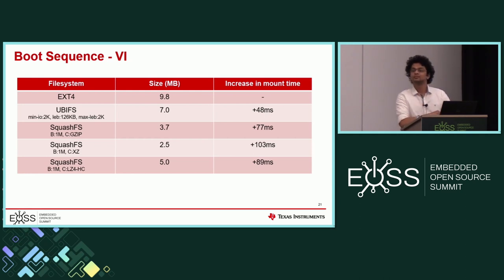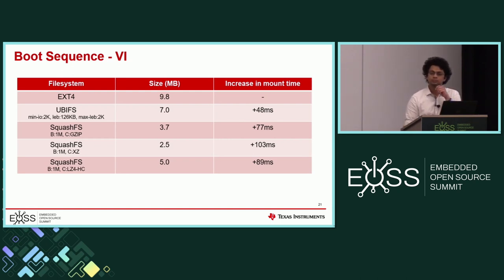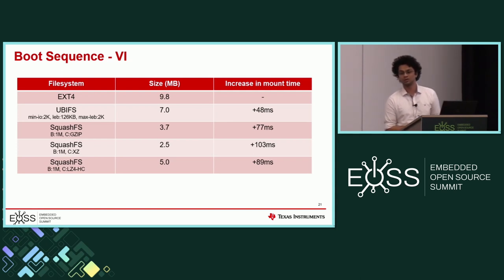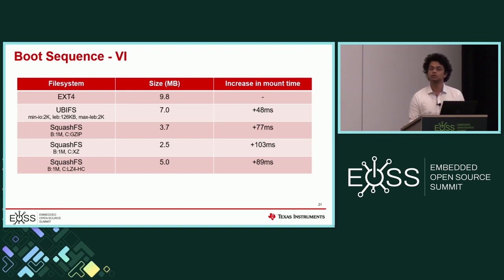I'd like to follow up a little bit on squashFS as well. There are settings around whether you decompress directly to page cache or decompress into a temporary buffer and then copy it to page cache. Also, what are you doing in single-threaded versus multi-threaded mode? Did you investigate how you're actually using squashFS in the kernel? No, I did not. We did not have too much time to get into that or the expertise, to be honest. But I will look into that.